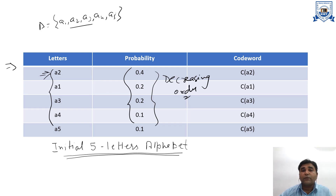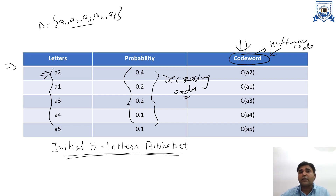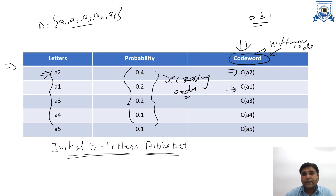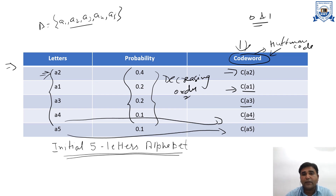Initially we have a table with five letters A1, A2, A3, A4, A5 with their probabilities. The codewords are initially denoted as C(A2), C(A1), C(A3), C(A4), and C(A5). The last two symbols A4 and A5 have the lowest probability, so we first assign their codewords.